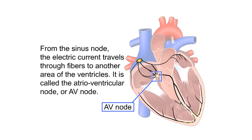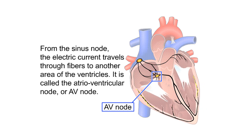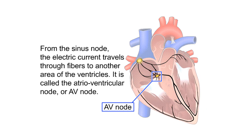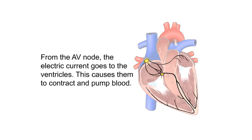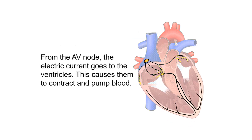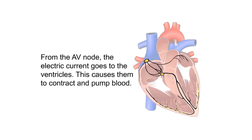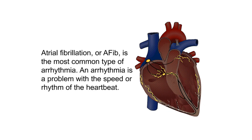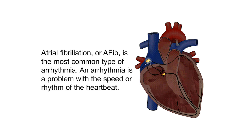From the sinus node, the electric current travels through fibers to another area called the atrioventricular node, or AV node. From the AV node, the electric current goes to the ventricles, causing them to contract and pump blood.